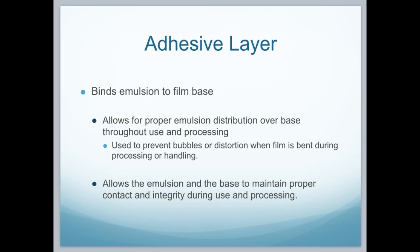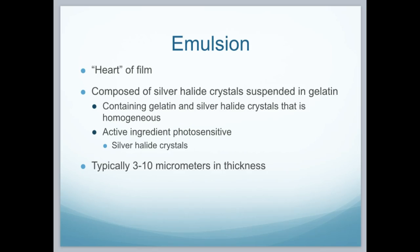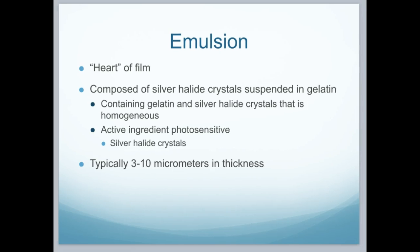Looking at the adhesive layer: this binds the emulsion to the film base and allows for proper emulsion distribution over the base throughout the process. It helps prevent bubbles or distortion when the film is being bent during processing or handling. The sole purpose of having film at all is because of the emulsion — it is the heart of the film. It's composed of silver halide crystals suspended in gelatin. It is homogeneous, and the active ingredient is the silver halide crystals.